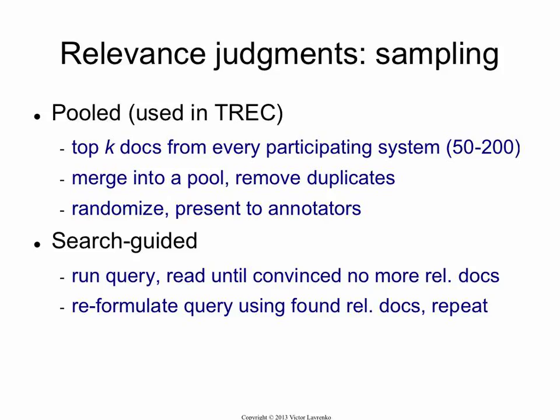Once you have this pool, you have your team of annotators. You assign documents to annotators randomly and make sure every document is looked at by at least a couple of annotators, so you can measure agreement and resolve disagreements — cases where one thinks it's relevant and another thinks it's not. That's pooled annotation.